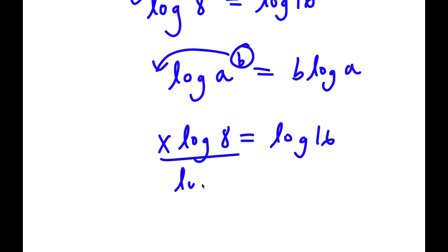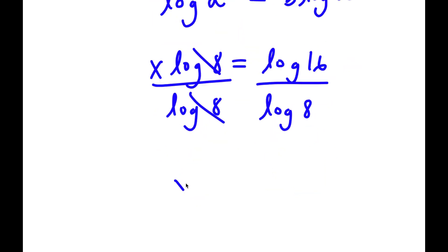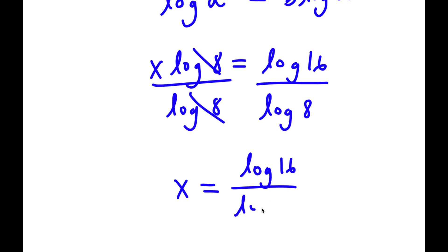Now I'm going to divide both sides by log 8. These two cancel out, and I have x is equal to log 16 over log 8.